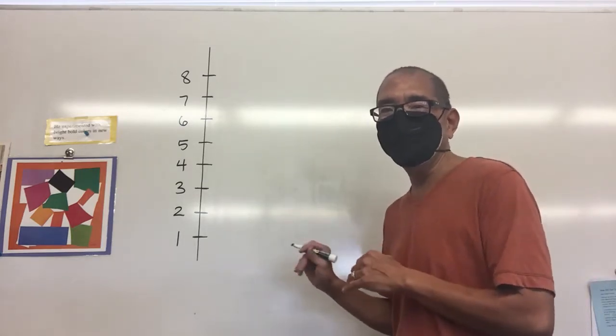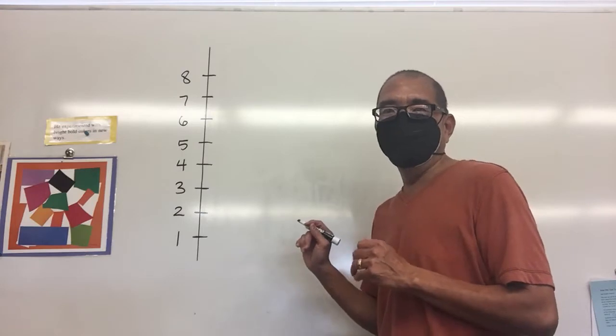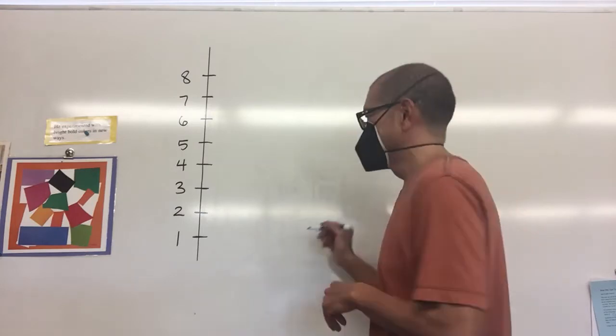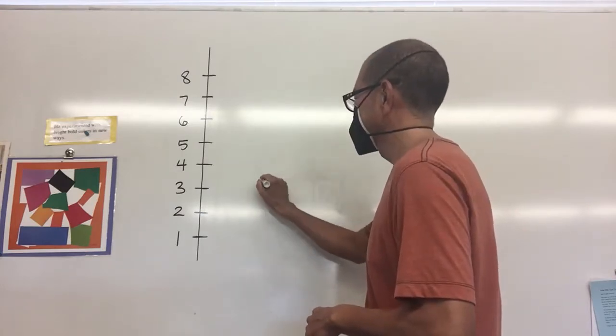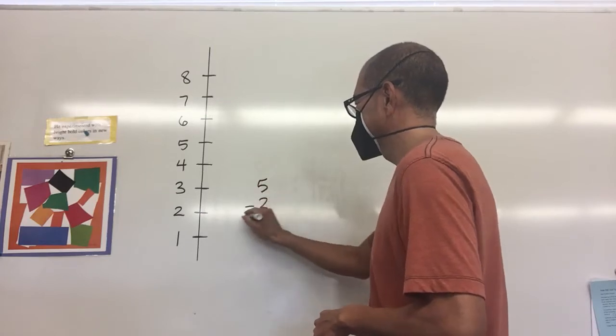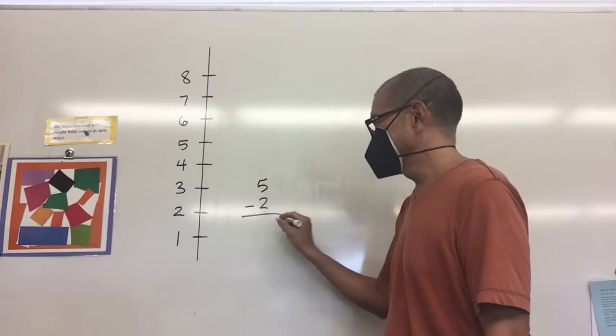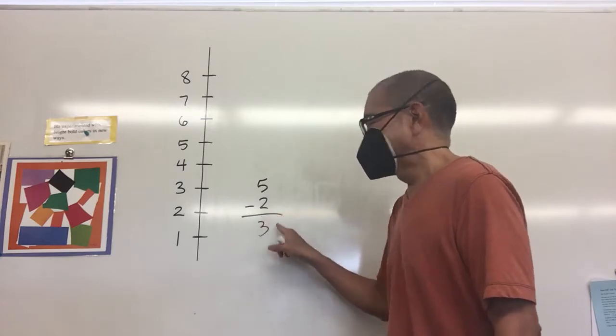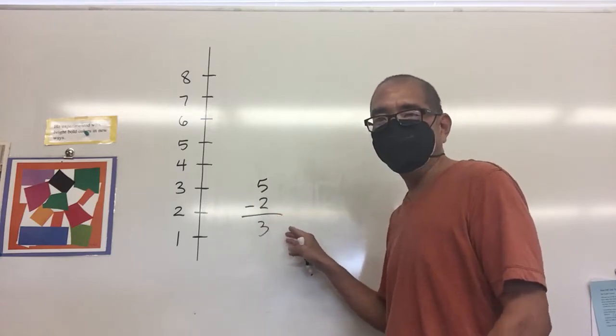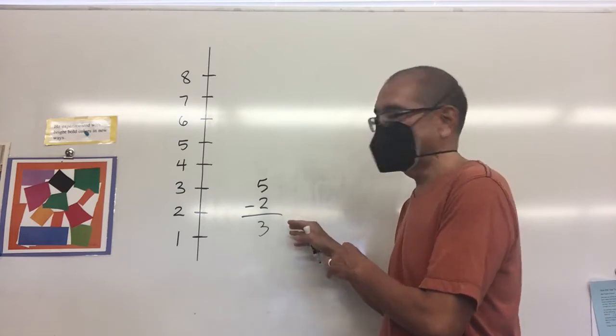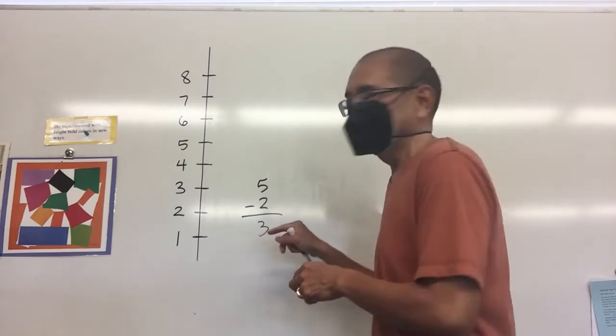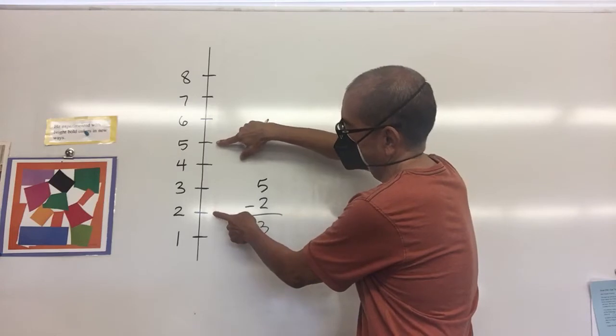Let's just say I have 5 minus 2. When we subtract 5 minus 2 we get 3. I just want to make sure that you understand what the 3 actually represents.